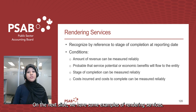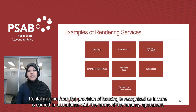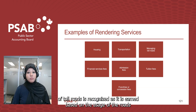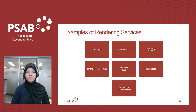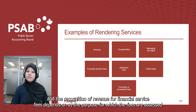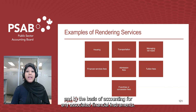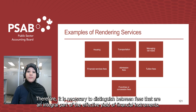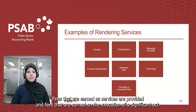Examples of rendering services include: rental income from the provision of housing, recognized as income is earned in accordance with the tenancy agreement; revenue from fares charged for school transport, recognized as transport is provided; revenue from management of toll roads, recognized based on usage; and recognition of revenue for financial service fees, which depends on the purpose for which the fees are assessed and the basis of accounting for any associated financial instruments.